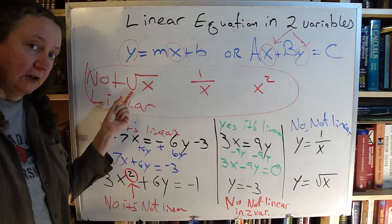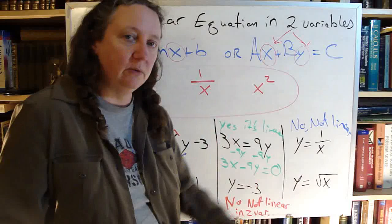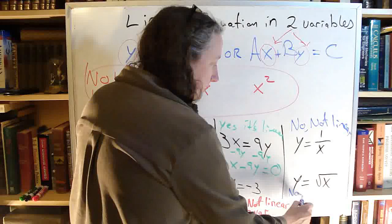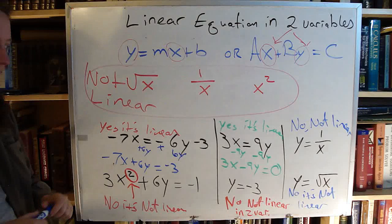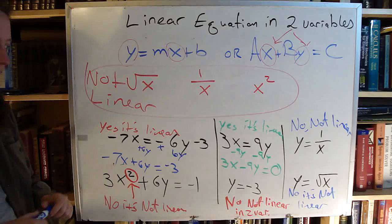Similar with this one. I told you to watch out for the variable under the square root symbol. This has the variable under the square root symbol. So no, this one is not linear. Now I have all six answers. My problems are done.